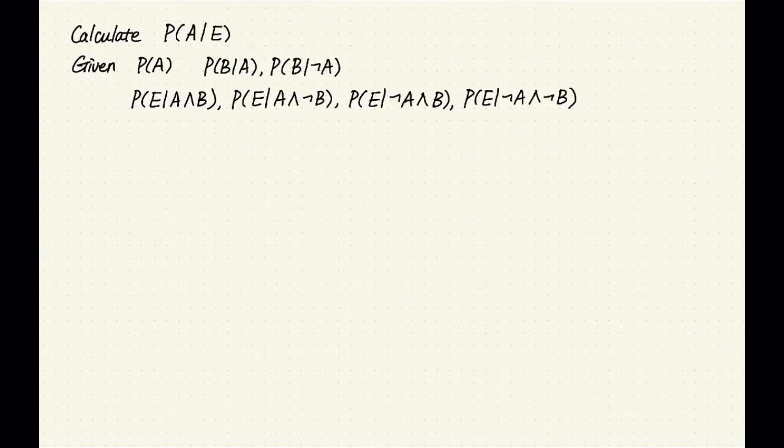Let's look at an example — example number two from the previous slide. We want to calculate the conditional probability: the probability of A being true given that E is true. We are given the probability of A, the probability of B given A, B given not-A, and the probability of E given various combinations of values of A and B. You might notice that we are given probabilities already in the form of the chain rule: the probability of A by itself, then the probability of B depending on A, then the probability of E depending on A and B. This suggests we can calculate the joint probability of the three variables using the chain rule.